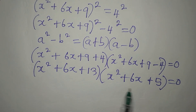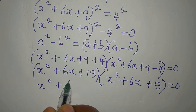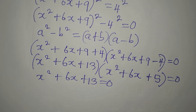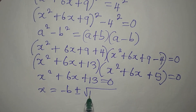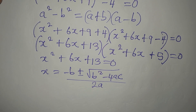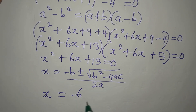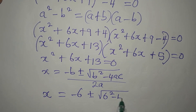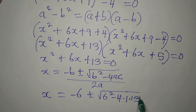We equate both factors to zero. Taking the first one: x² + 6x + 13 = 0. This is a quadratic. The quadratic formula is x equals negative b plus or minus the square root of b squared minus 4ac, all over 2a. So our x will be: in place of minus b write minus 6, because b is 6, then plus or minus the square root of 6 squared minus 4 times 1 times 13, because a is 1 and c is 13.